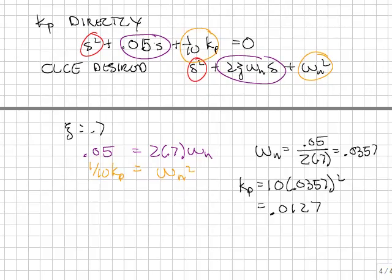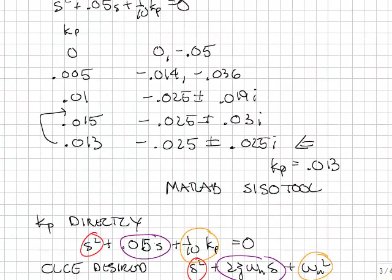And with a little bit of algebra, here we go. We can solve for omega n and then substitute in and solve for kp. And we're left with kp is equal to 0.0127, which is approximately what we had before, 0.013.